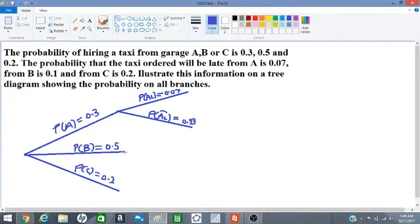Let us move on. The probability of hiring a late taxi from B is 0.1. So we have probability BL 0.1. Probability that is not late, probability of BL with a little bar on top, 1 minus 0.1 which is 0.9.